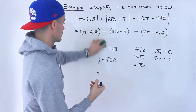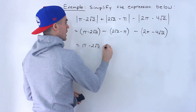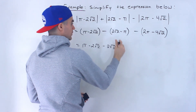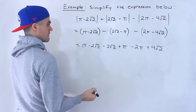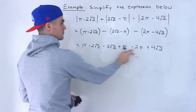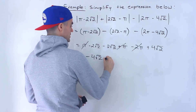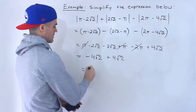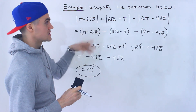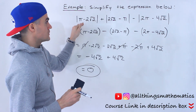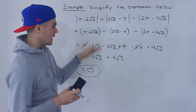Now we've removed all the absolute values and can simplify. We have pi minus 2 root 2, then distribute the negative: minus 2 root 2 plus pi, then minus 2 pi plus 4 root 2. Collecting terms: pi plus pi minus 2 pi nets out to zero. And minus 2 root 2 minus 2 root 2 plus 4 root 2 also nets out to zero. So the whole expression equals zero. Be careful with these questions — when you're not using a calculator, you have to determine whether each expression inside an absolute value is positive or negative first, then adjust and simplify.